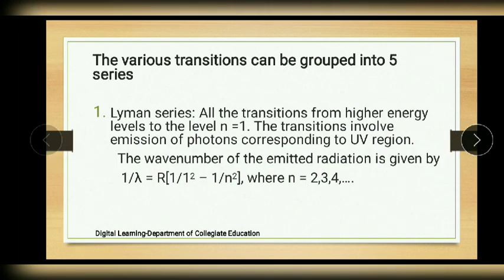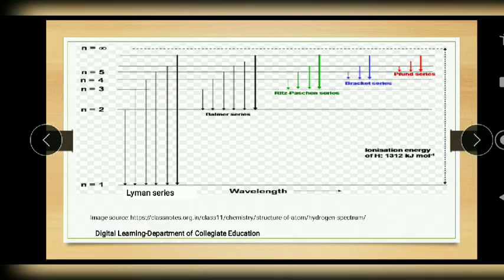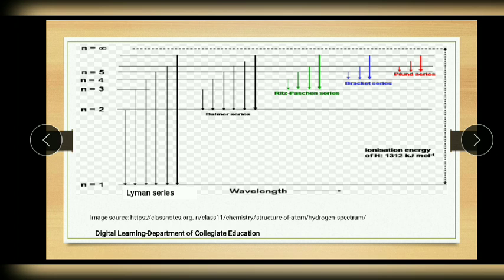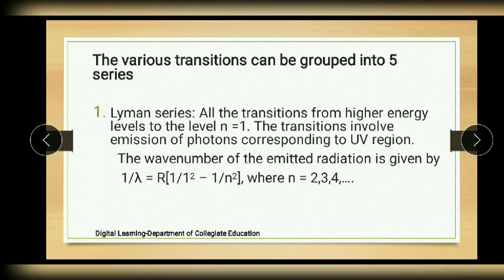The various transitions can be grouped into five series. The first one is the Lyman series. All transitions from higher energy levels — 2nd, 3rd, 4th, and so on up to infinity — to the first energy level (n = 1) give the Lyman series. These transitions involve emission of photons corresponding to the UV region. The wave number is given by the Rydberg equation where ni = 1 and nf can take values 2, 3, 4, and so on.